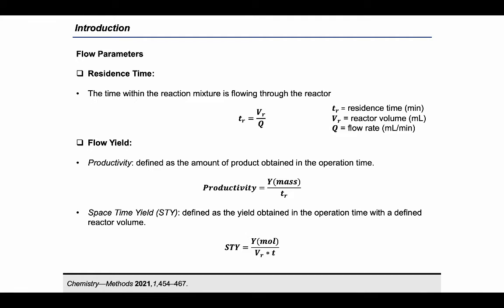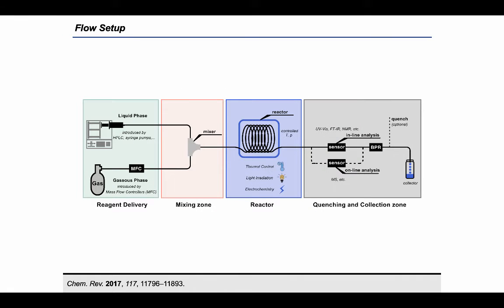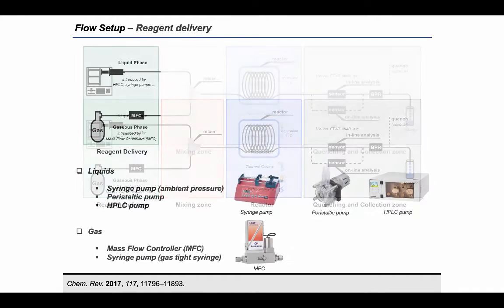Now let's take a look at the flow setup. Every flow system can be divided into four main parts: the reagent delivery zone, the mixing zone, the reactor, and the quenching and collection zone.